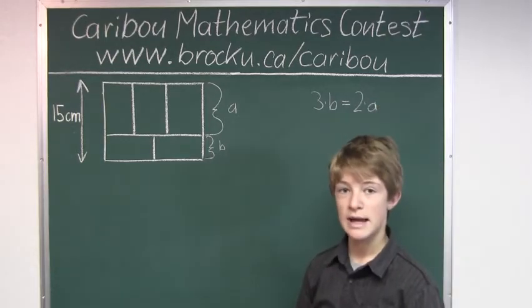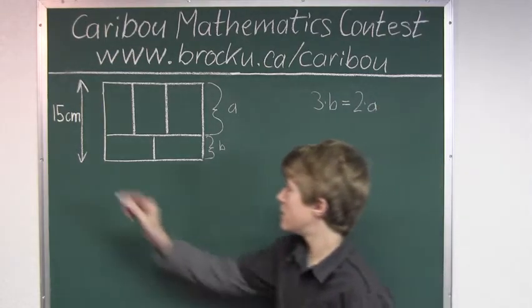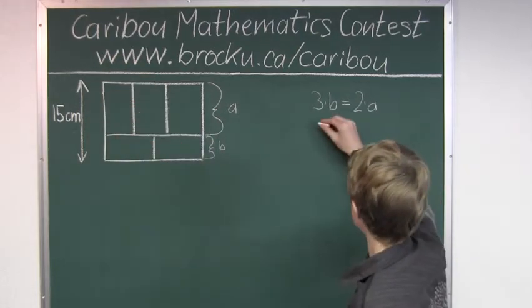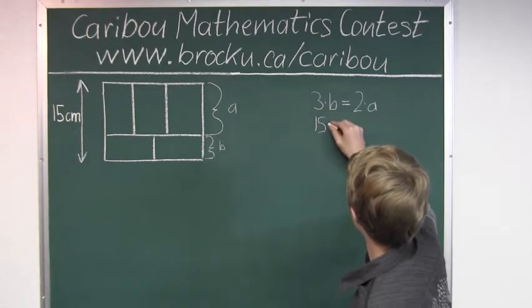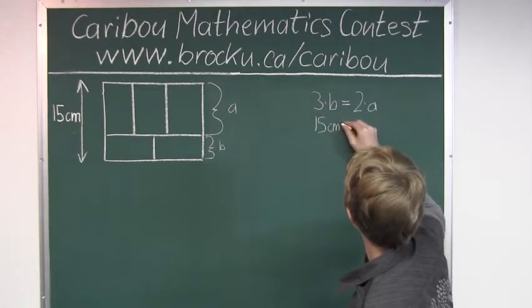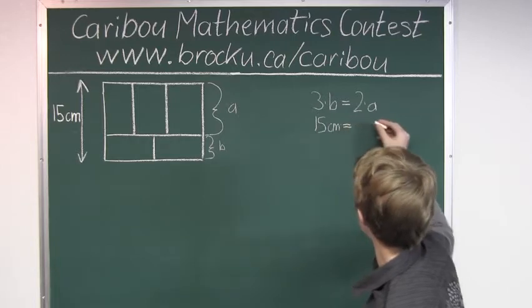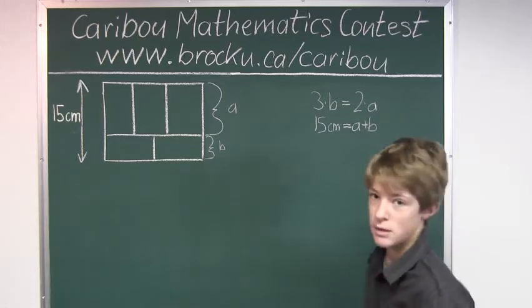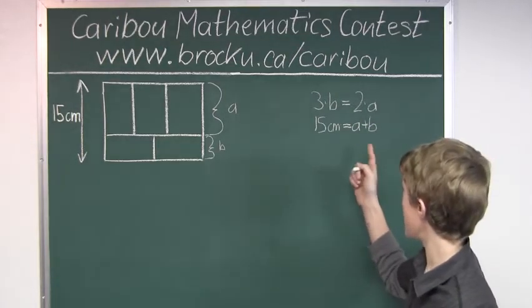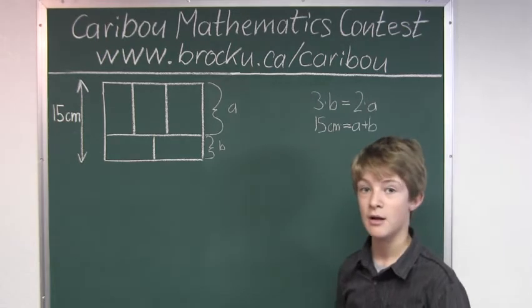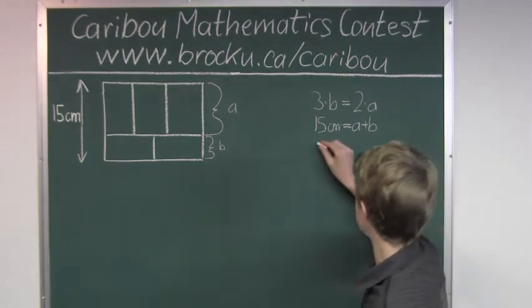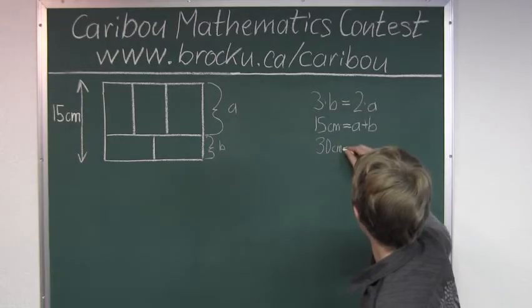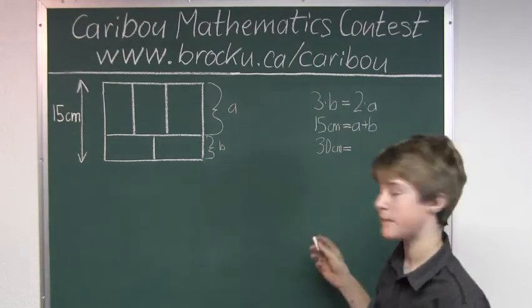So the next thing that we know is that 15 centimeters equals a plus b. If we know that 15 centimeters equals a plus b, then we know that 30 centimeters, which is twice that, is two times a plus two times b.